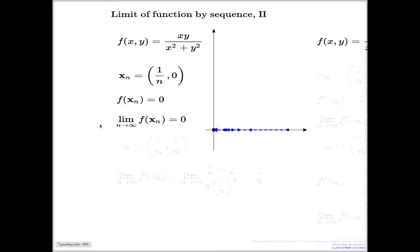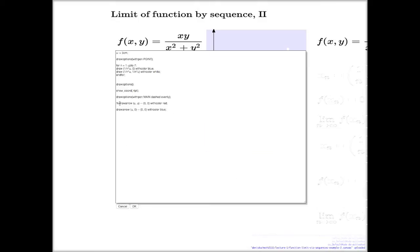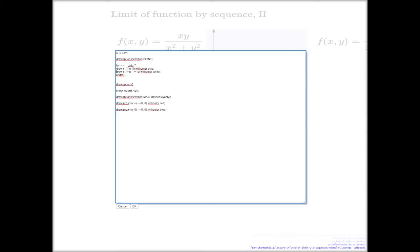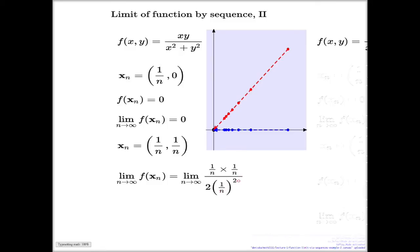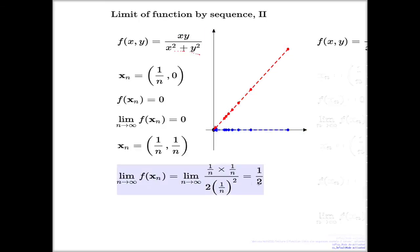On the other hand, if I take another sequence along the bisector, the limit of the same function but over this different sequence delivers one half. Just substituting (1/n, 1/n): across this sequence it will be 1/n² in the numerator, and 1/n² plus 1/n² in the denominator — double 1/n² — exactly what you see here: it's one half.